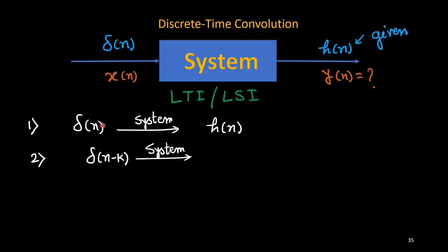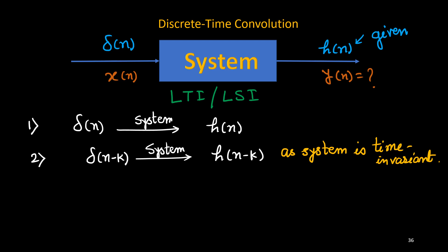If instead of δ(n) we apply a shifted input δ(n−k) — where k can be any value, positive (delayed) or negative (advanced) — then because the system is time invariant, the corresponding output is h(n−k). A delayed input produces an output delayed by the same number of samples k.